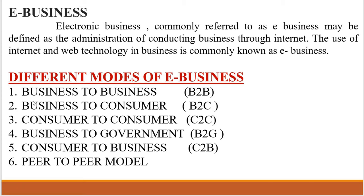B2G means business to government. It is a business model that refers to businesses selling products, services, or information to governments or government agencies. An example is a firm that offers IT consulting services to a government agency. Next, consumer to business, C2B. It is a business model where the end consumer creates products and services which are consumed by businesses and organizations.